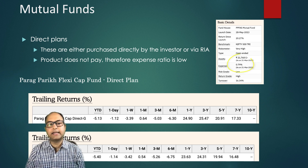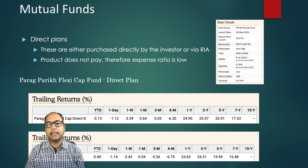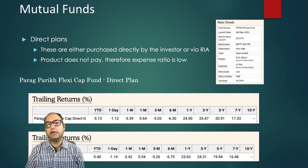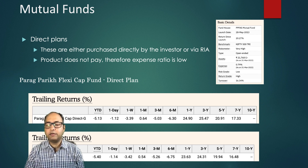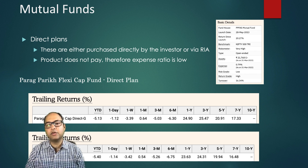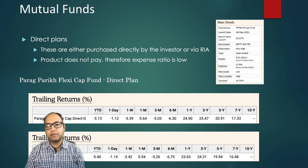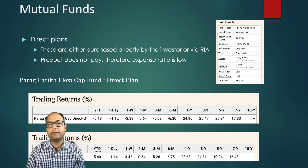The expense ratio for the direct plan is 0.79 percent versus 1.79 percent for the regular plan — a difference of one percent. The only difference between the two plans is how they are served: regular is facilitated by an agent, while direct has no agent involved. For equity funds you'll find a difference of 0.9 to 1 percent, and for debt funds, depending on the category, there would be a difference of around 0.1 to 0.5 percent.